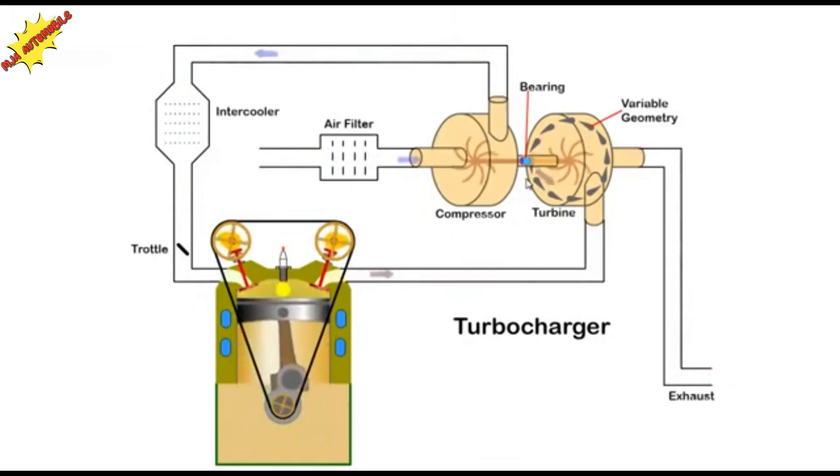As we require constant boost pressure from the turbo, it is common to use a variable geometry turbine. The vane angle can be adjusted depending on exhaust gas flow.